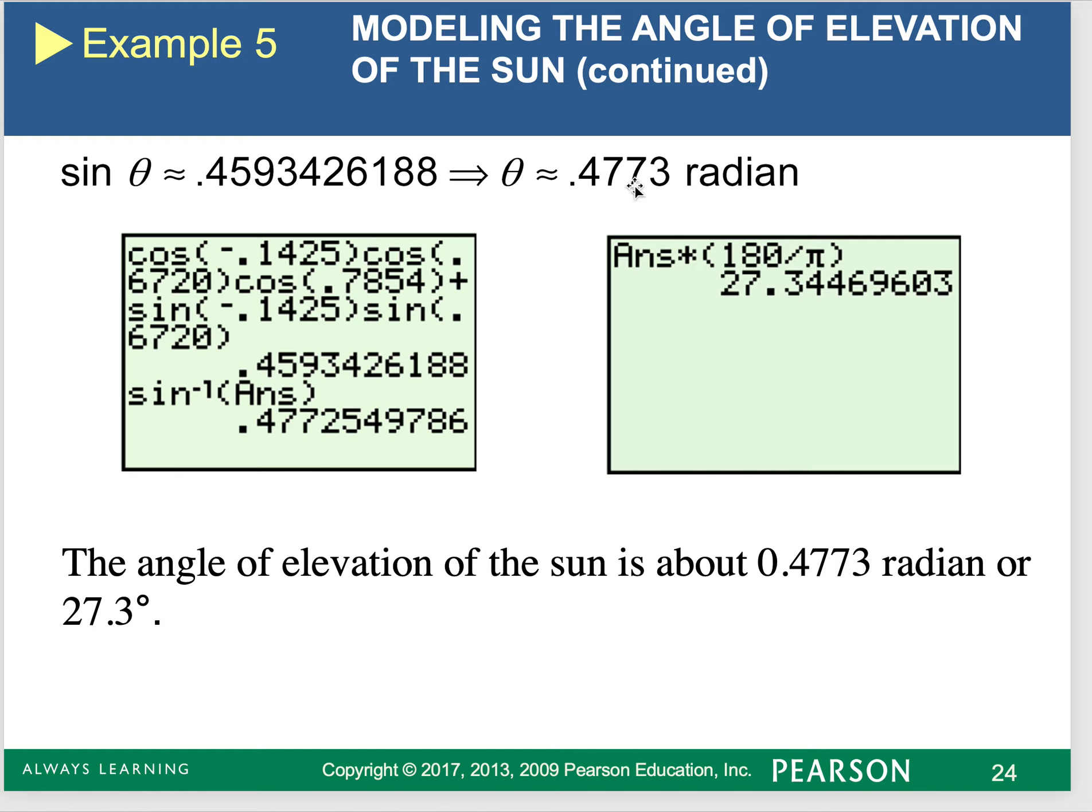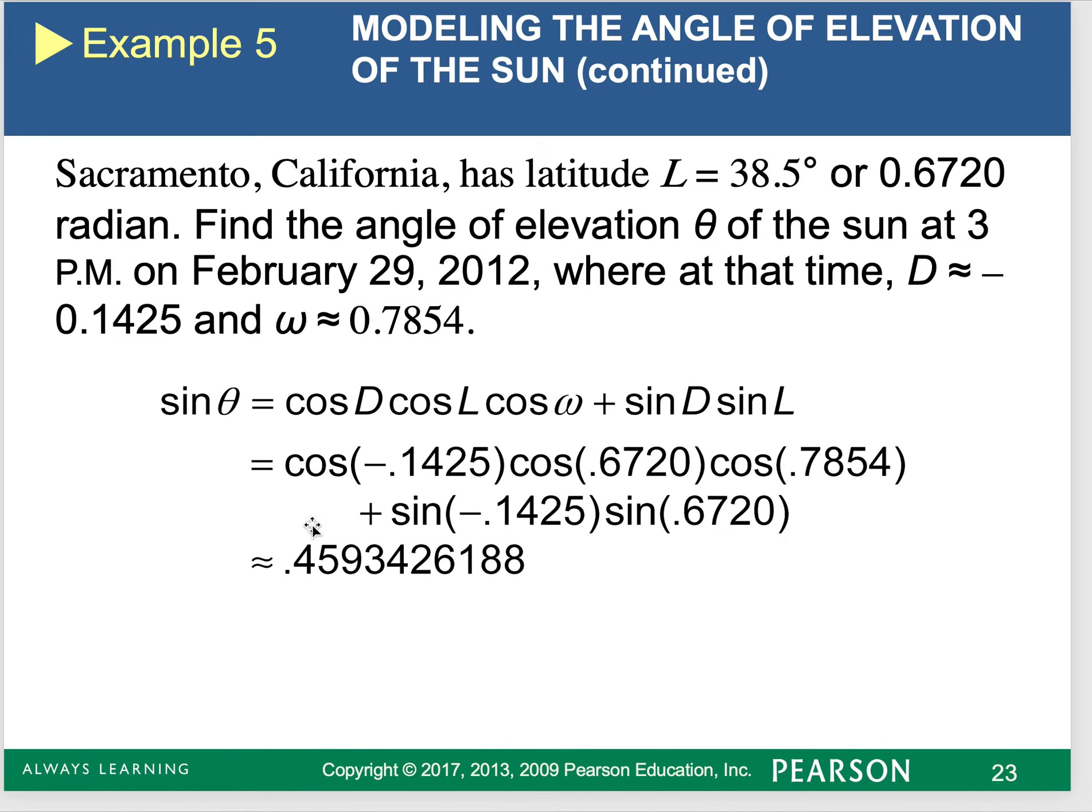If I know that sine of theta is 0.459, I can do sine inverse to find my radian measurement. So I can go through and do those angle of elevation problems backwards, finding those angles. This isn't something we're necessarily going to go through in this unit, but I did want to quickly show that.